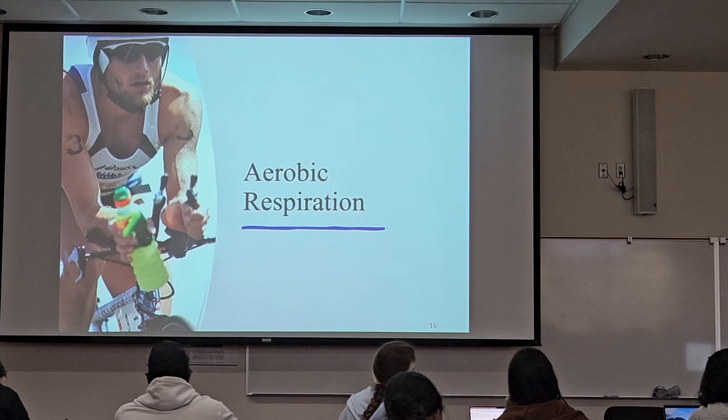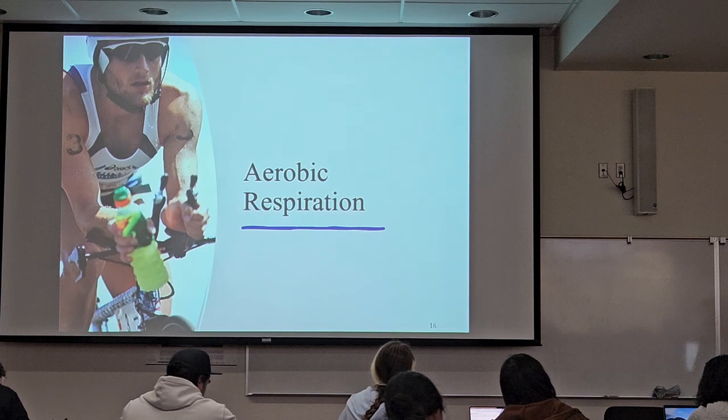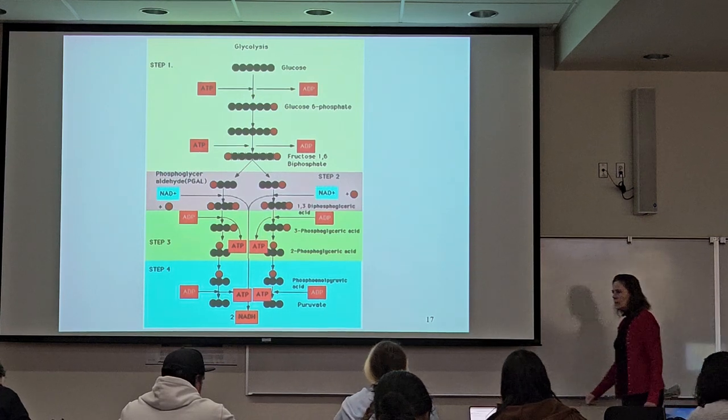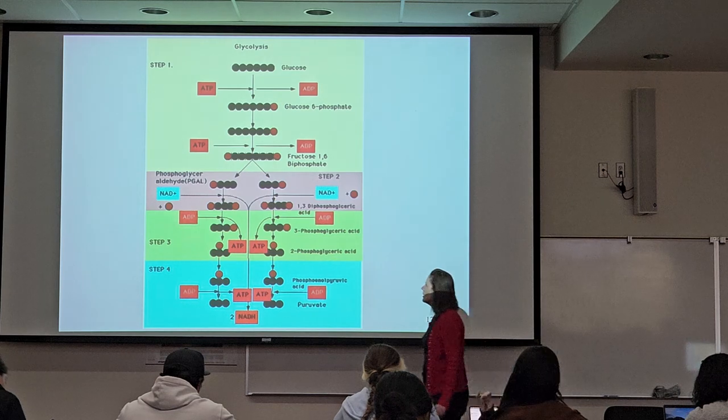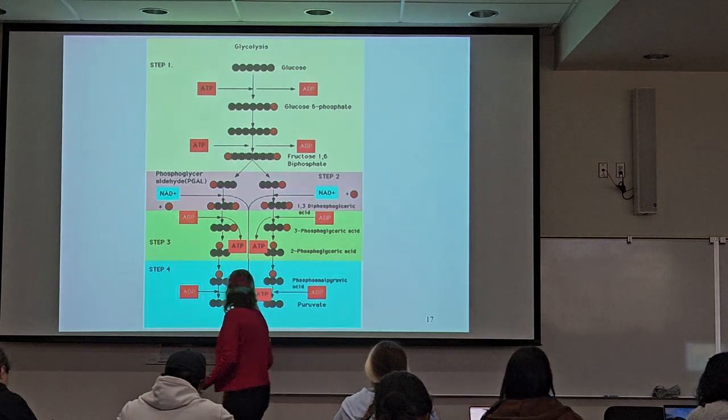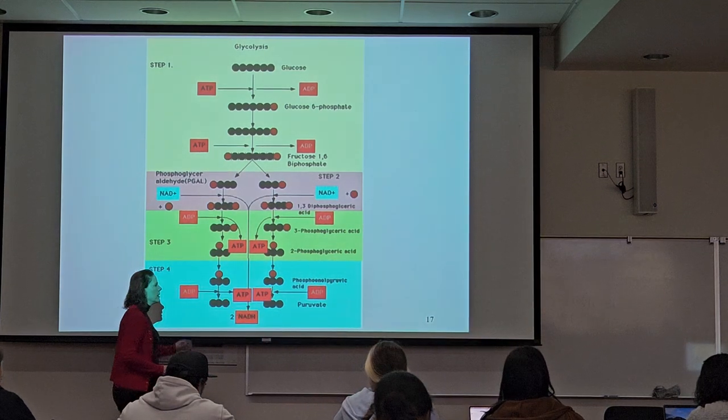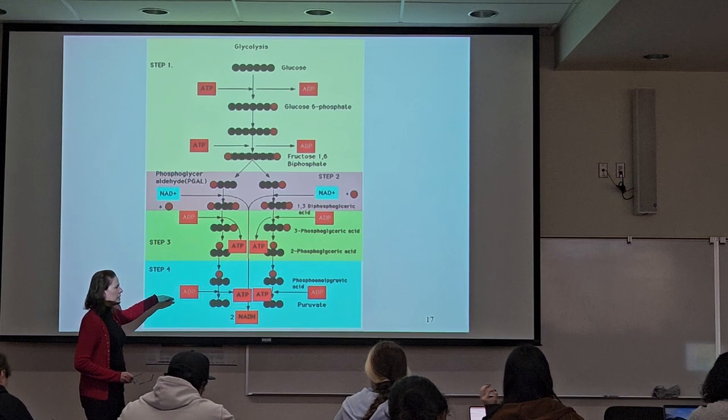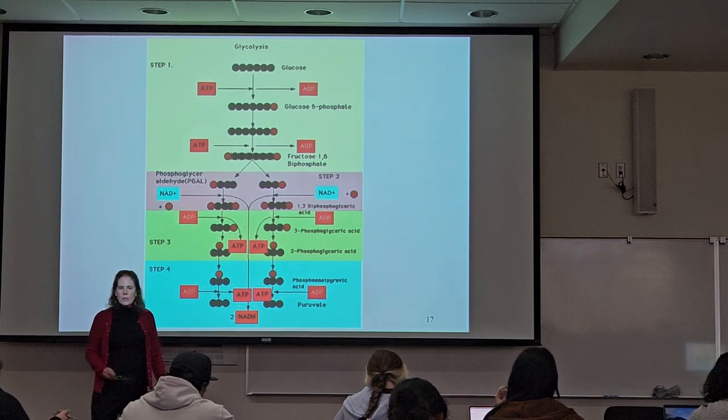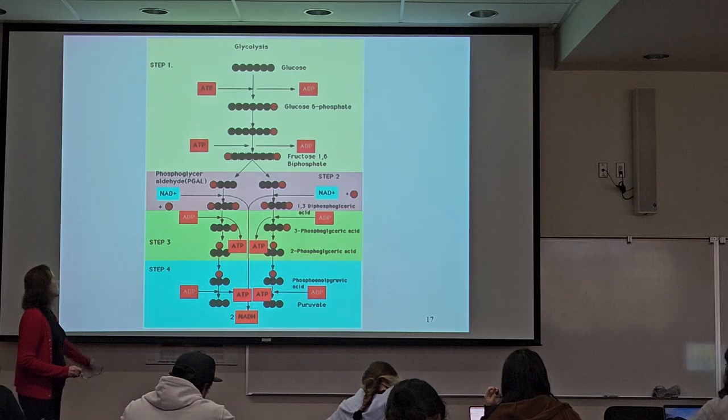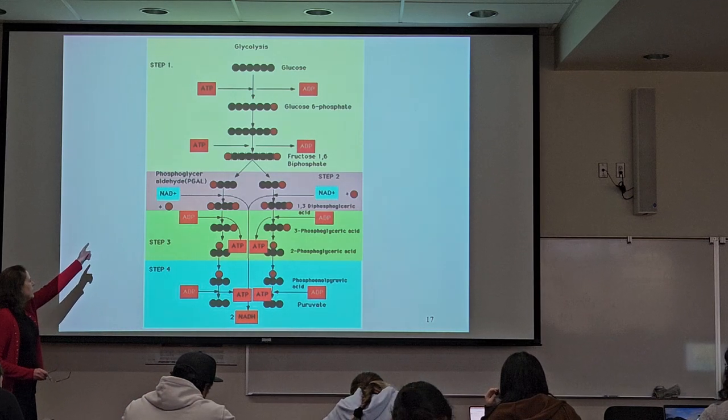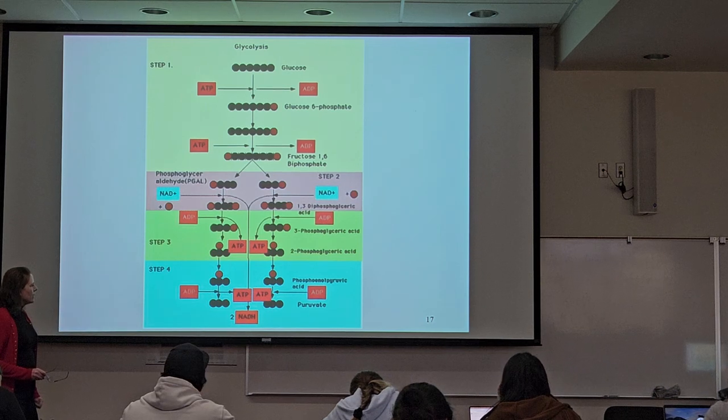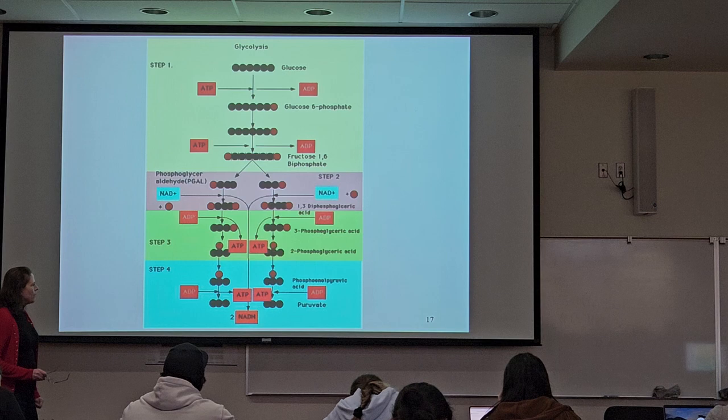Aerobic respiration starts out the same way as fermentation with glycolysis, so same thing. Through glycolysis, he's going to be able to get two ATPs via substrate level phosphorylation. The NAD pluses get reduced to NADH, so we're going to have two of those. And we're going to have two pyruvates.